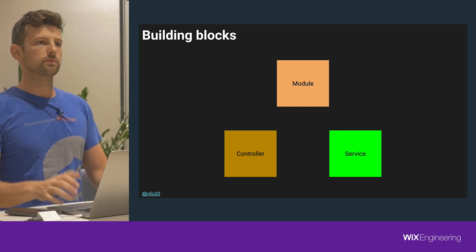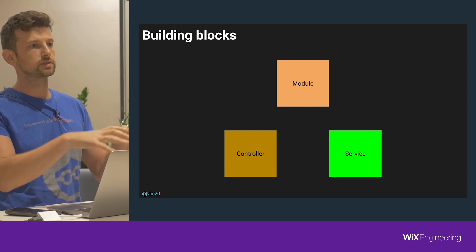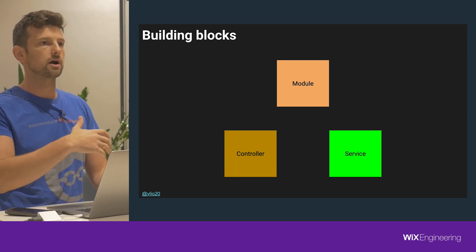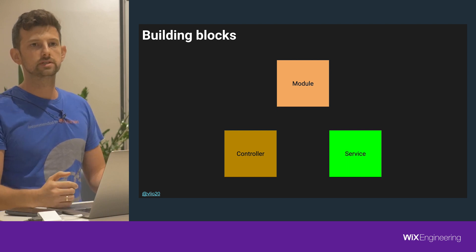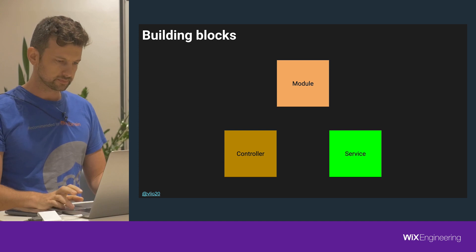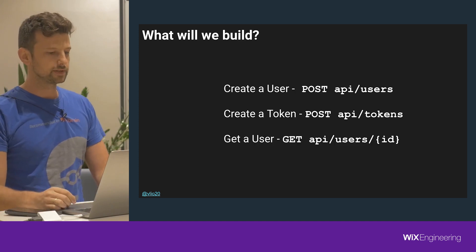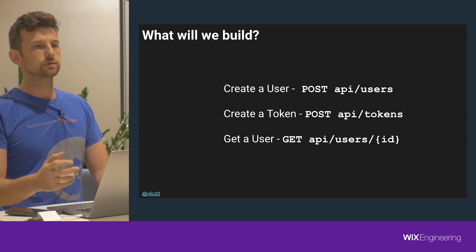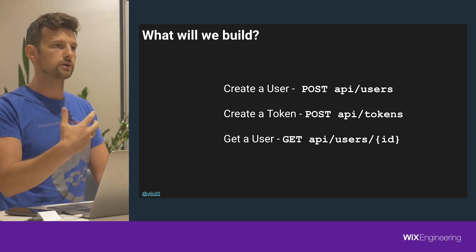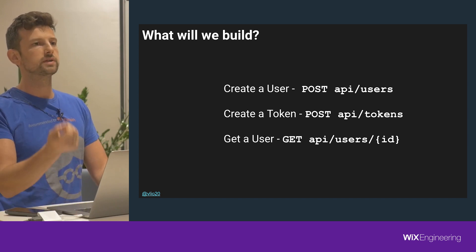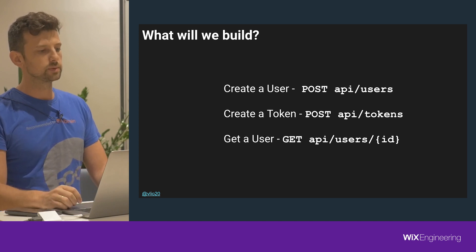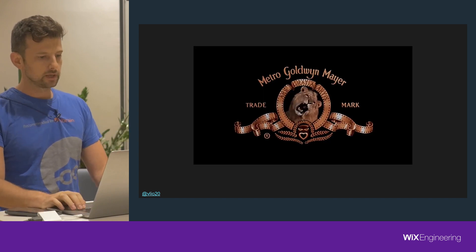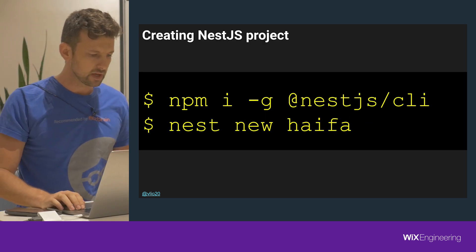Every NestJS application consists of three main building blocks. The first is the module — the module represents your domain; you can split your application into domains. Each module has controllers and services. Controllers are where you put your routes and endpoints, and services hold your business logic. Today we'll do a lot of live coding. We will create three endpoints: the first to create a user, the second to create a token or log in, and the last to retrieve a created user by ID — available only for authenticated users.